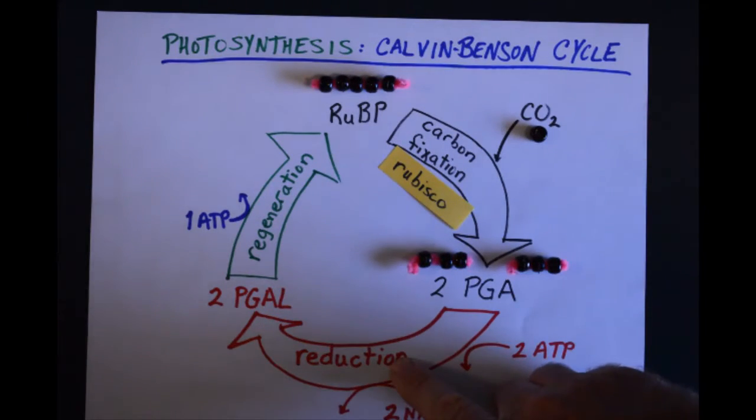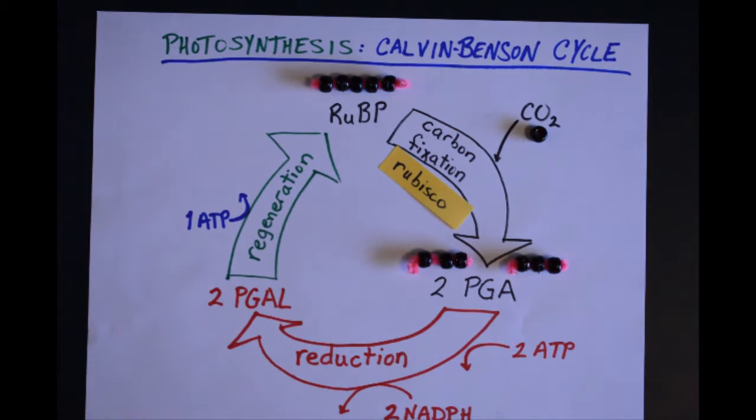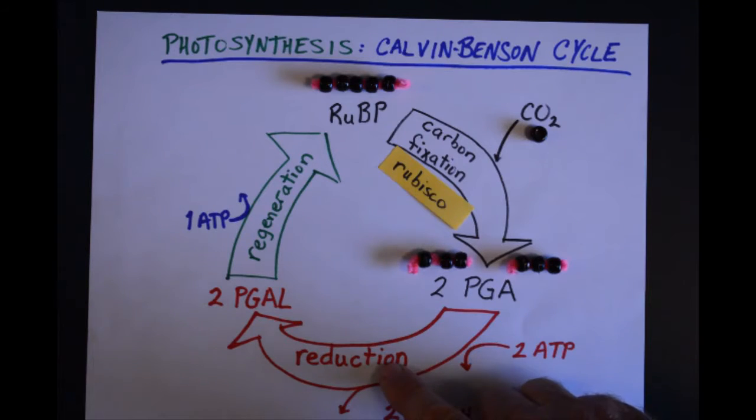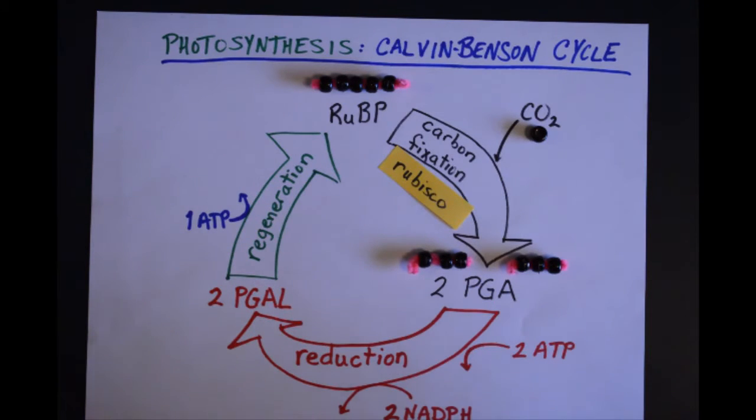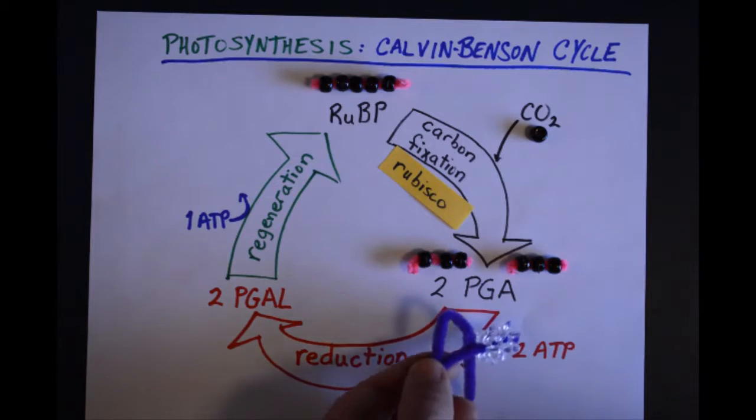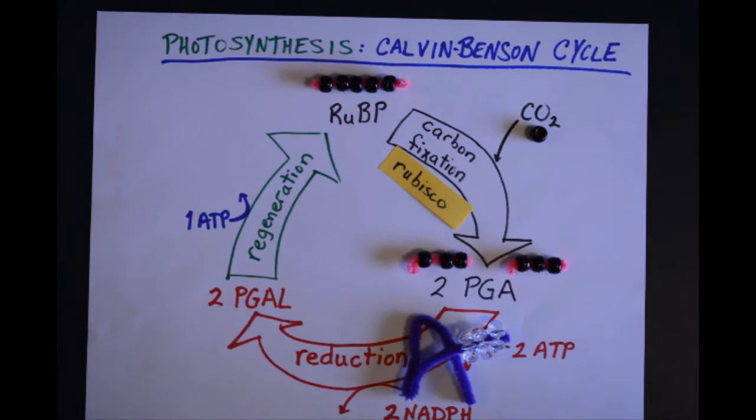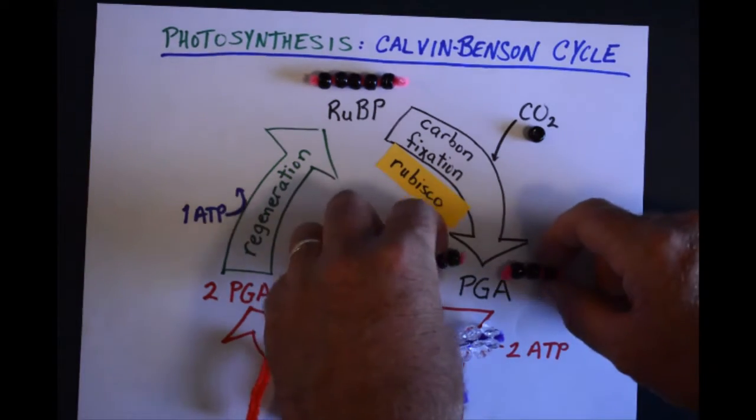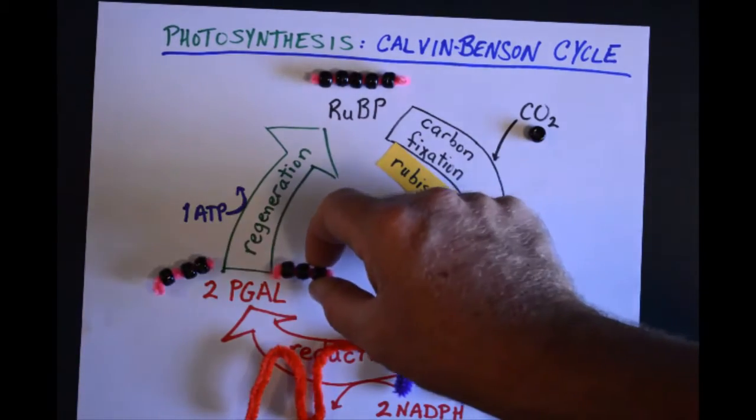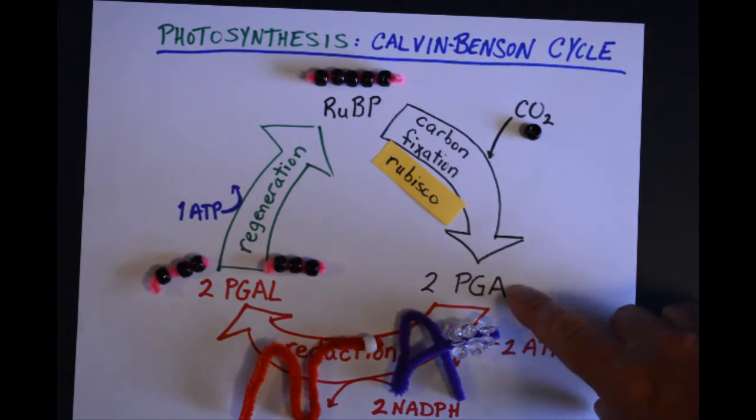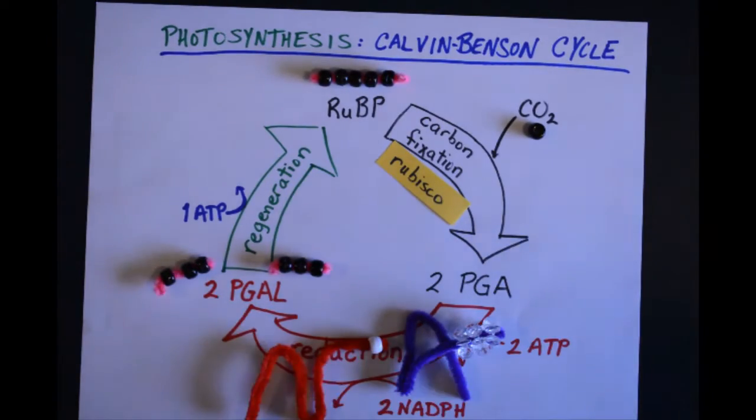Next, we're going to add some energy to this in the process of reduction. That may sound counterintuitive, but if you're familiar with the redox reactions, reduction is adding electrons. So we need some higher energy molecules, some ATP, some NADPH to contribute some electrons. And as they do, they're going to convert these phosphoglycerate molecules into phosphoglyceraldehyde.